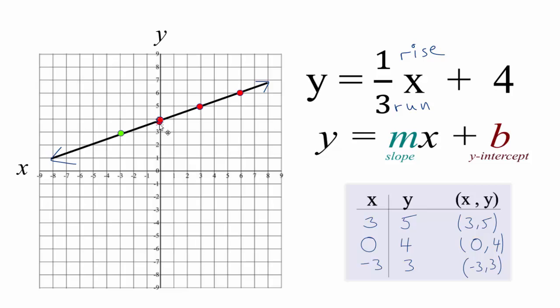Likewise, we could come down one and over one, two, three. And again, from there, down one over one, two, three. And that gives us our graph for y equals one-third x plus four.